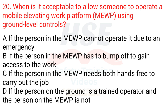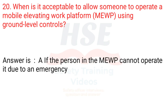Question 20: When is it acceptable to allow someone to operate a mobile elevating work platform (MEWP) using ground level controls? A. If the person in the MEWP cannot operate it due to an emergency. B. If the person in the MEWP has to bump off to gain access to the work. C. If the person in the MEWP needs both hands free to carry out the job. D. If the person on the ground is a trained operator and the person in the MEWP is not. Answer is A. If the person in the MEWP cannot operate it due to an emergency.